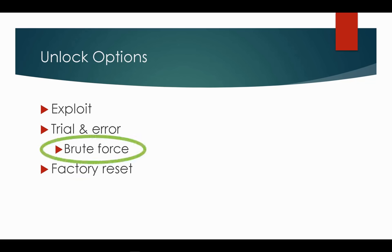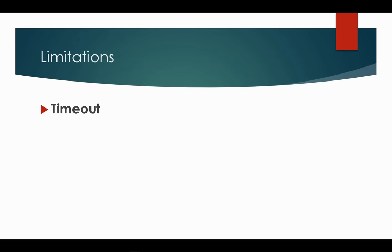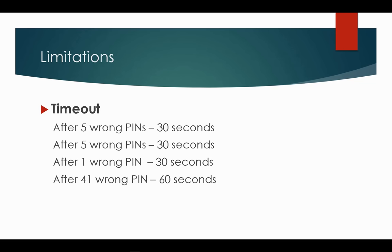We will focus on brute force. Using brute force has two limitations. The first is timeout — there is no way to bypass timeout without exploits. After five wrong PIN attempts there is a 30-second cooldown, another five wrong attempts gives another 30 seconds, and after reaching 41 attempts there is a 60-second cooldown after each wrong PIN. These timeouts apply to stock Android.